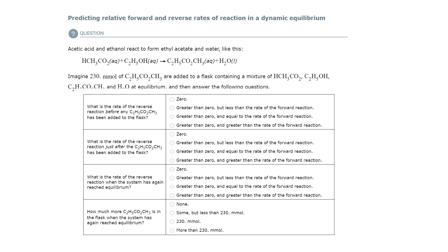The first question is very similar to the ones that we did in class. We have a reaction in equilibrium — just assume those double arrows. Imagine 230 millimoles of a compound are added to a flask containing a mixture of all this stuff at equilibrium. What do you highlight? At equilibrium.